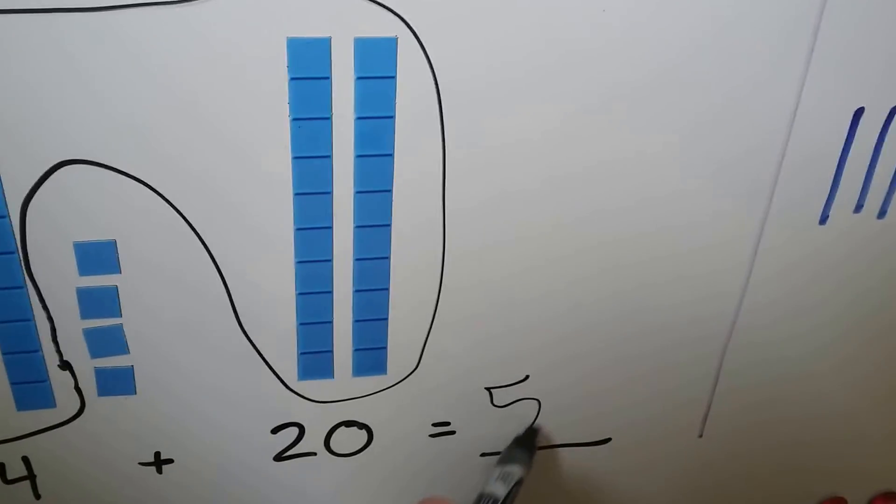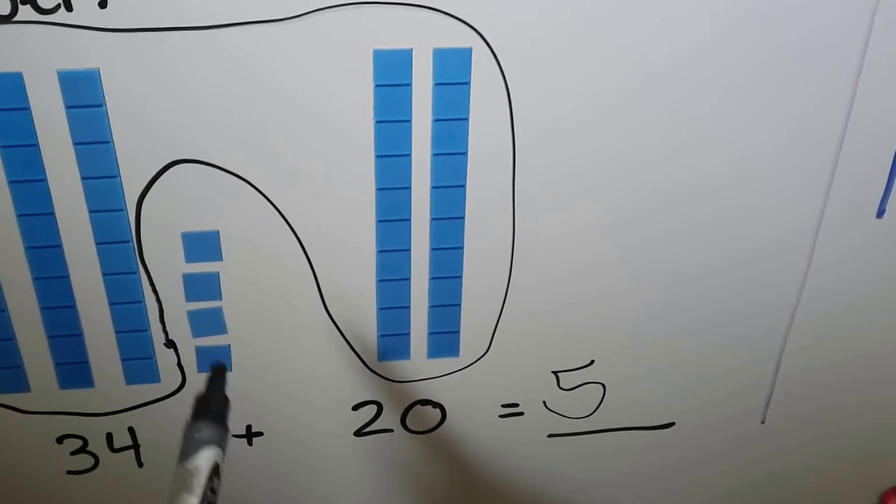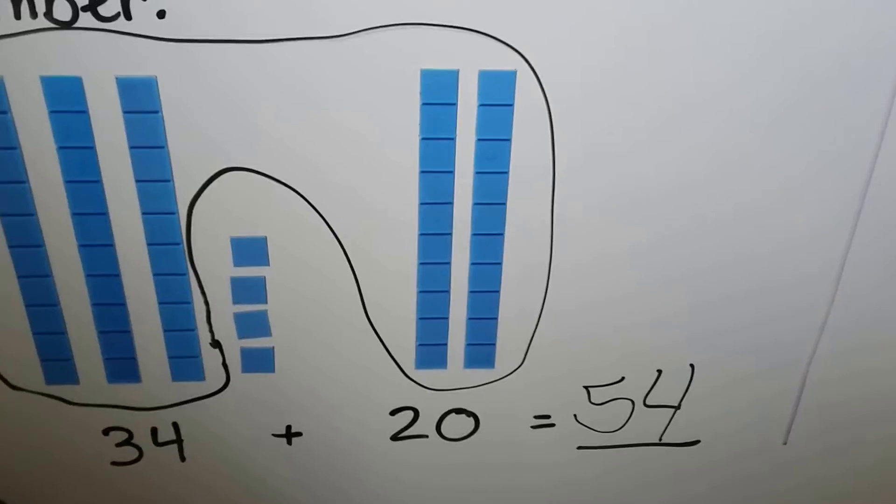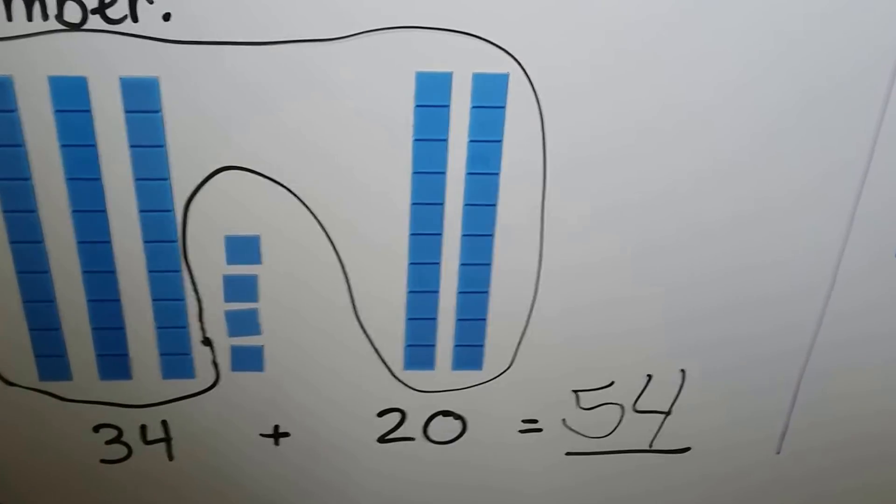We have 1, 2, 3, 4 ones. 34 plus 20 is 54.